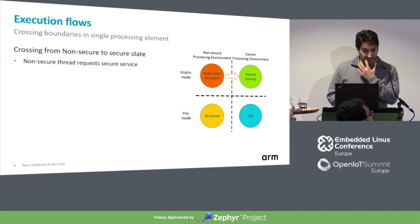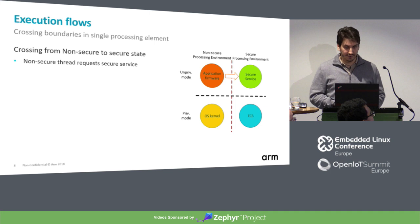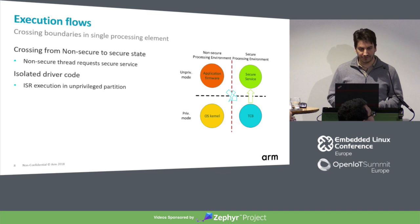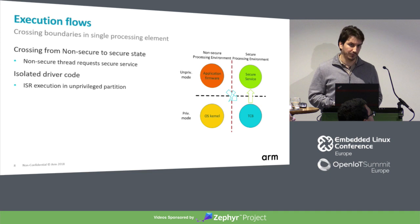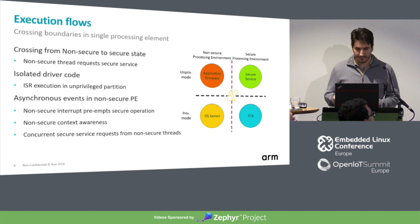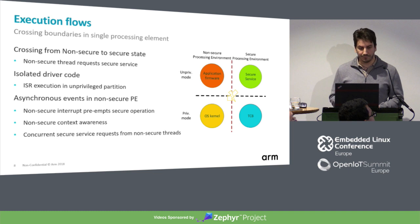The basic use case is a non-secure thread requesting a secure service — a crossing from the non-secure to the secure state. I will discuss isolated drivers, where an interrupt service routine is implemented by a secure partition and you don't want to run it in privileged mode. There may also be asynchronous events on the non-secure side that might preempt a secure execution, and I will discuss those cases.